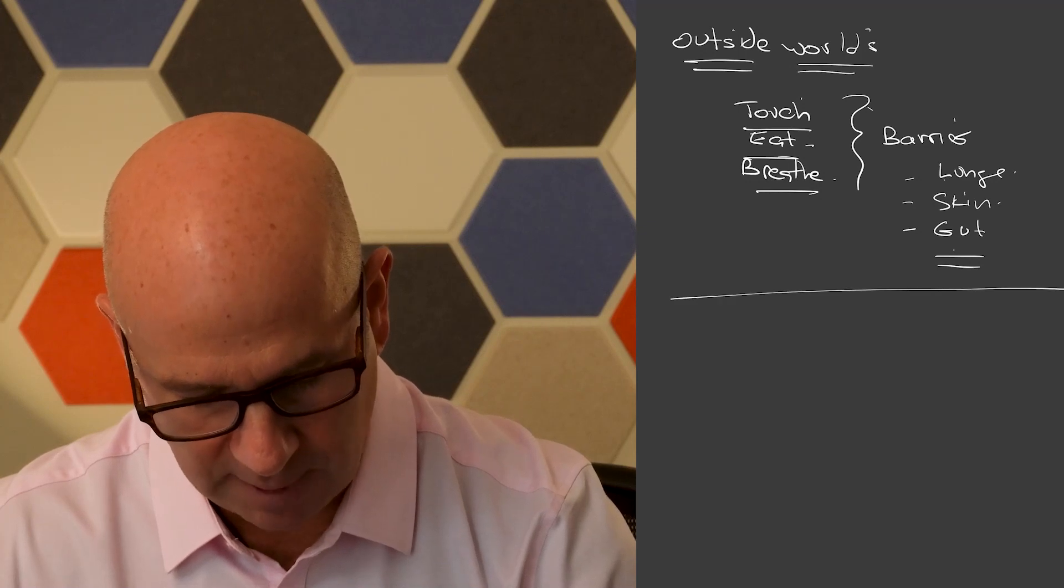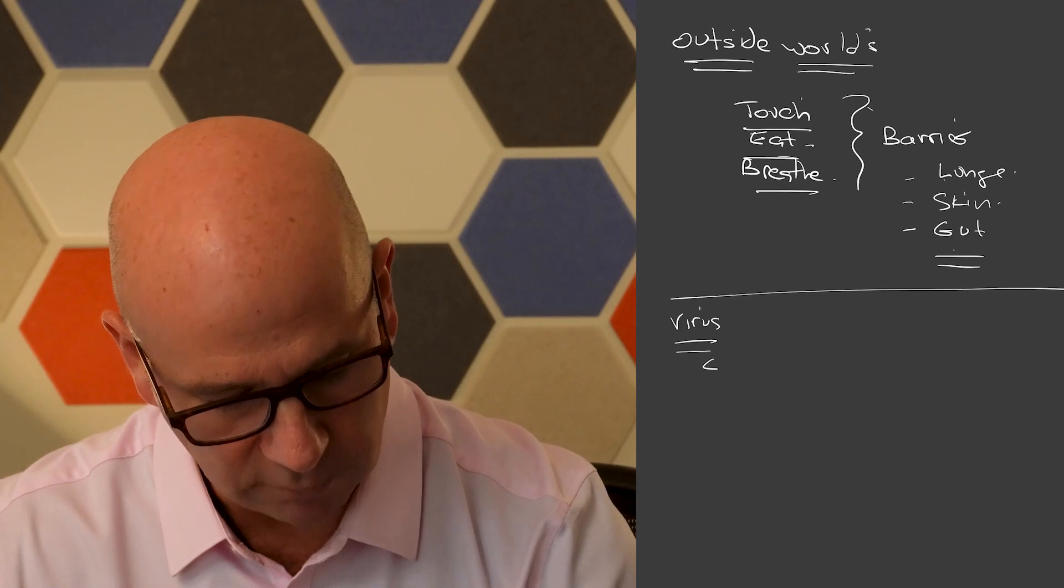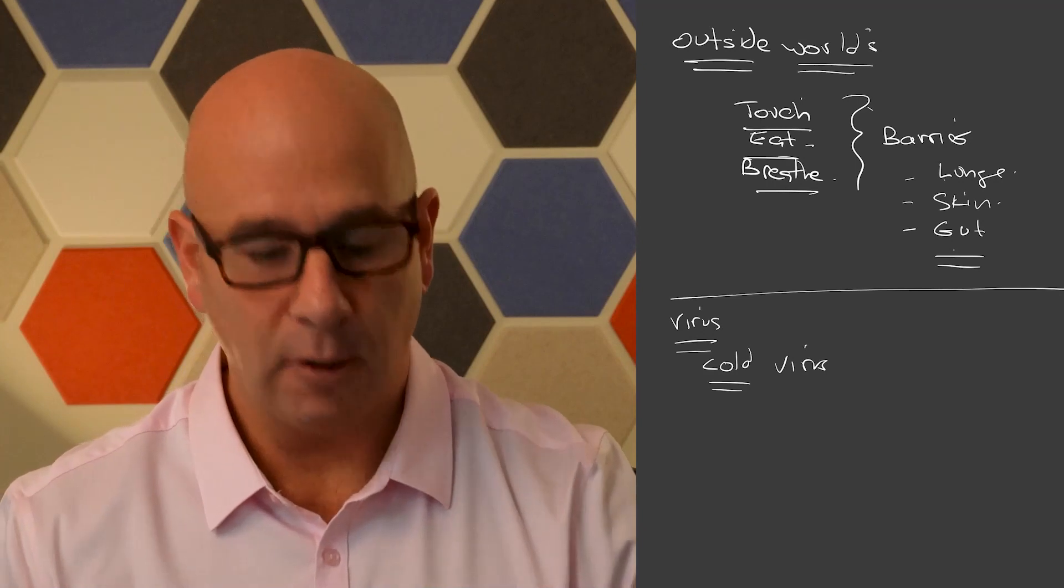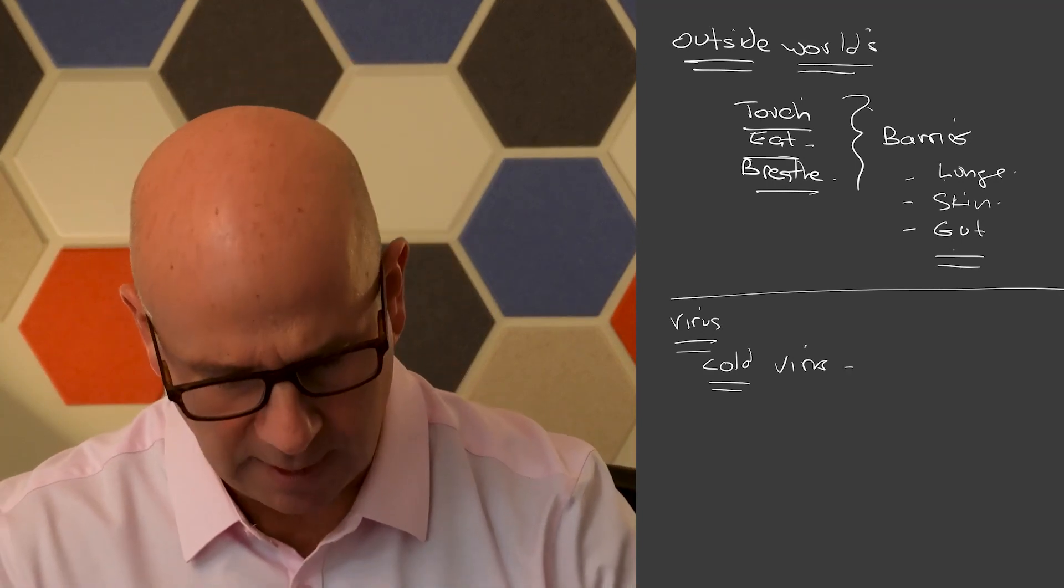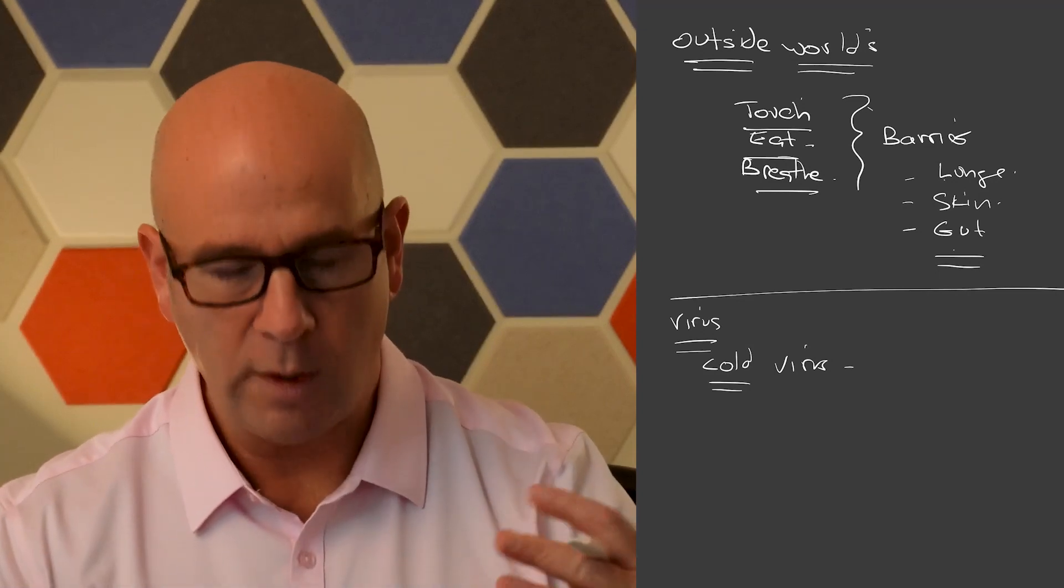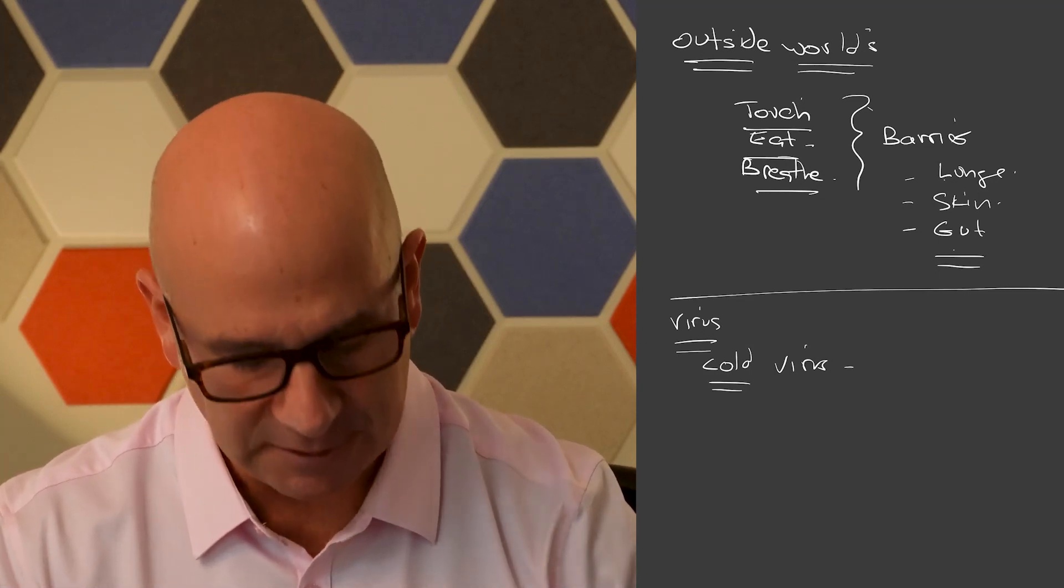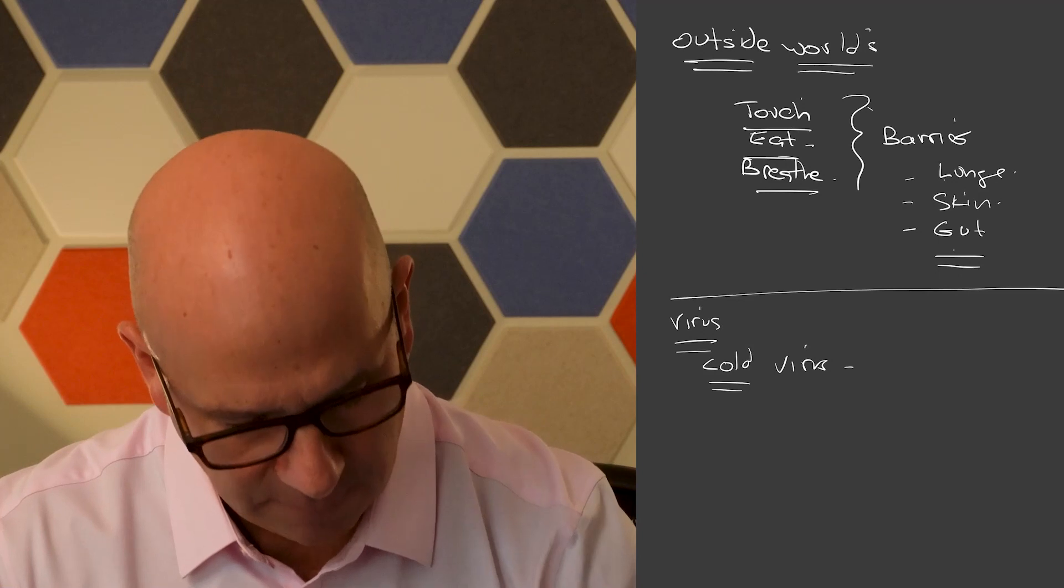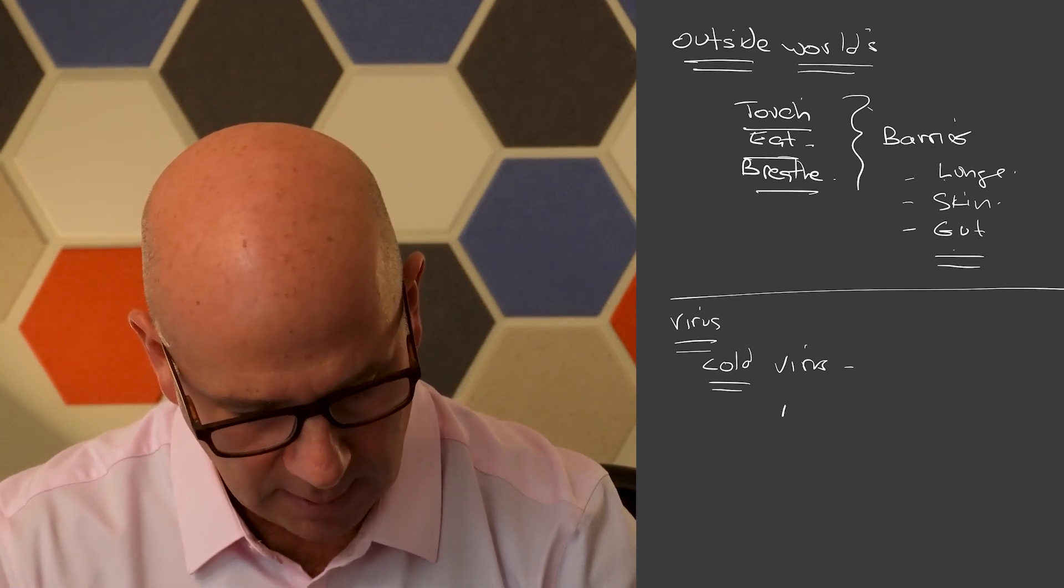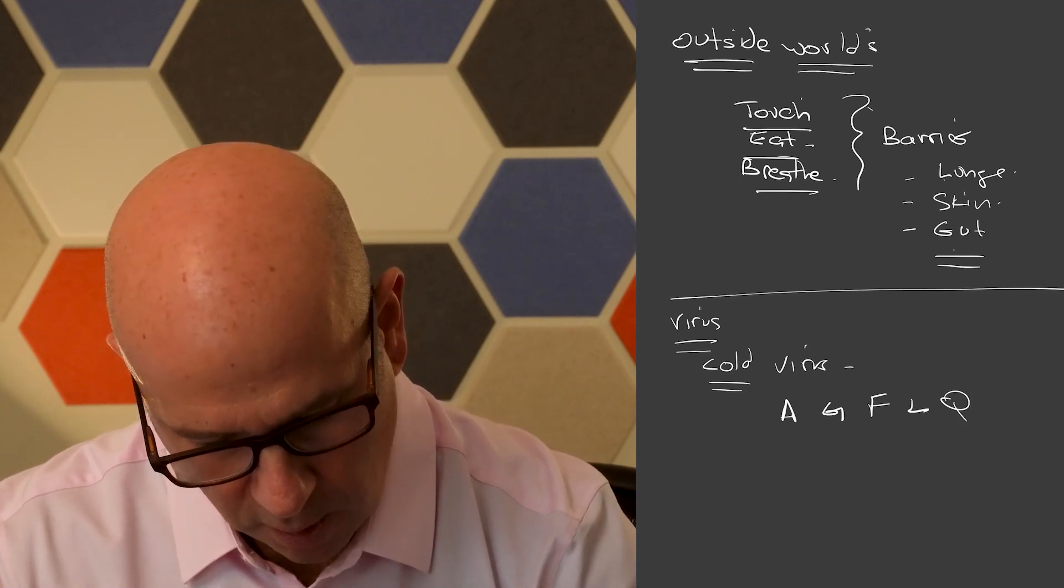So what happens when things from the outside world get into the inside world? Let's just take a virus, a cold virus, a common cold virus. That is a long protein, and a protein is made up of little particles. So let's just say the sequence of what makes up that protein has letters. We call those, there are 20 amino acids, and this is, you know, think of them as like an alphabet. Let's just say the cold virus has a section that is, you know, A, G, F, L, Q, R, Z, 1.